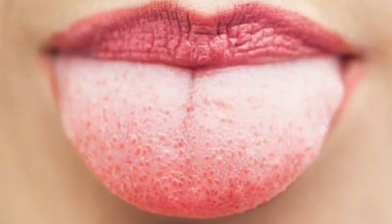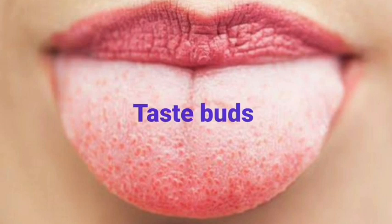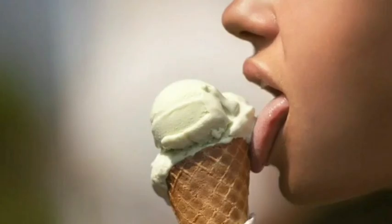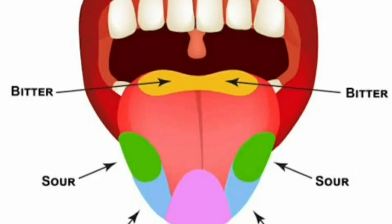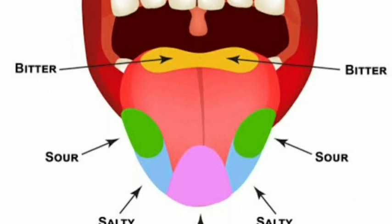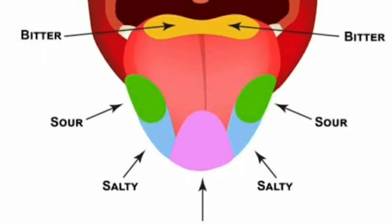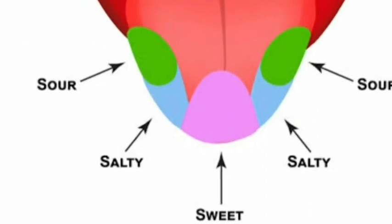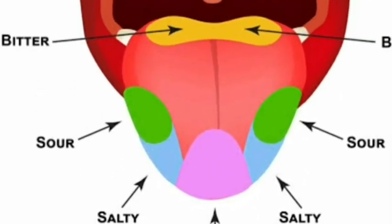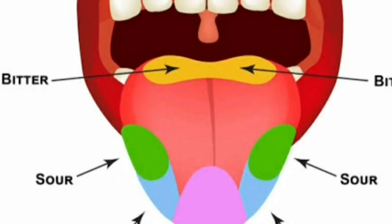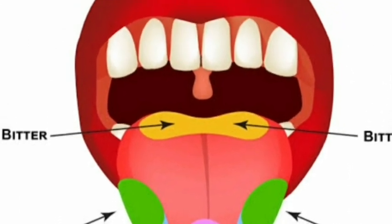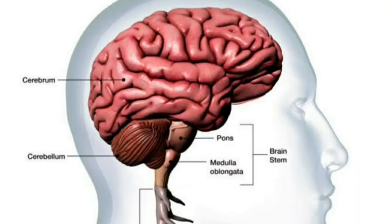The uneven surface of the tongue is due to the presence of taste buds. Tongue has tiny bumps on its surface which are called taste buds. Taste buds are sensory organs found on our tongue and allow us to experience tastes that are sweet, salty, sour and bitter. These are the four basic tastes.